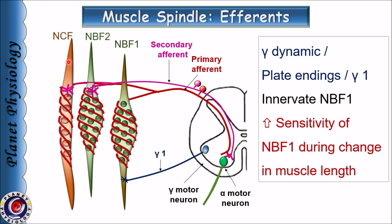Efferents are also of two types. The first is gamma dynamic efferent, also known as gamma 1 efferent. They form plate endings and innervate only dynamic nuclear bag fibers. Stimulation of these fibers increases the sensitivity of the dynamic annulospiral endings.